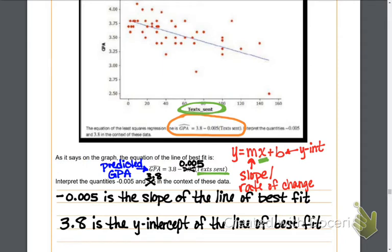So it's not enough to say that 3.8 is the y-intercept and negative 0.005 is the slope, because that does not explain in context the meaning of these pieces. So that 3.8, since that's the y-intercept, that would be the expected GPA for a student that sends zero text messages throughout the day.